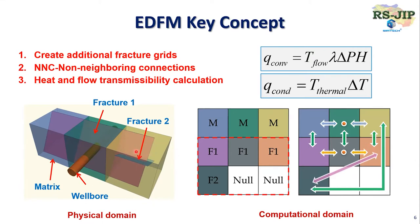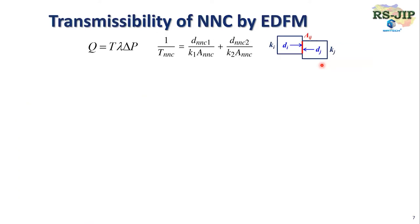For example, fracture two talks to the third matrix block. However, they are non-neighbors, so that's the reason we use non-neighbor connections. And the last step, we calculate heat and flow transmissibility based on this equation. That's the key concept of EDFM. This equation shows how to calculate transmissibility for two grid blocks. The transmissibility calculation only depends on three parameters: the relative distance between two grids, the contact area, and the permeability. So it's not related to fluid property, meaning EDFM can work for both black oil simulation and compositional simulation.